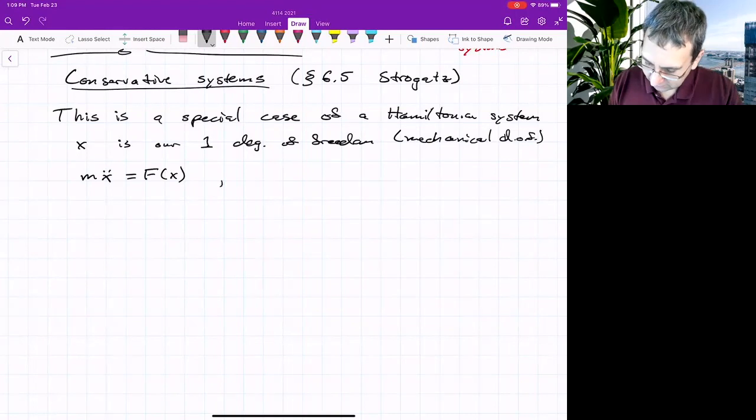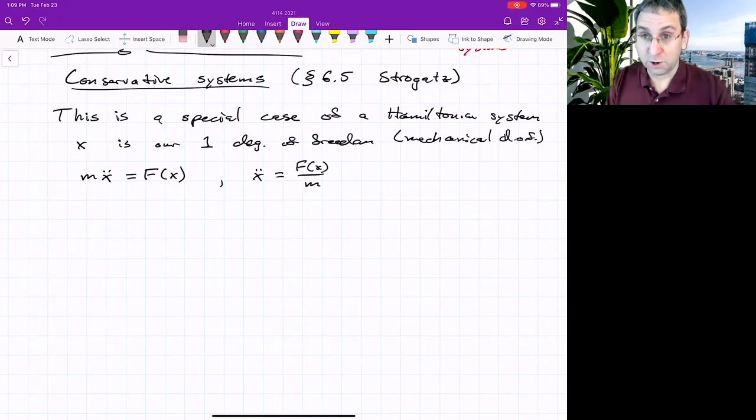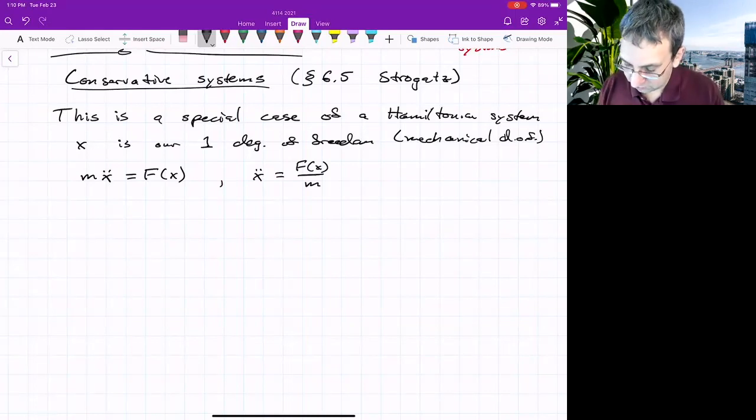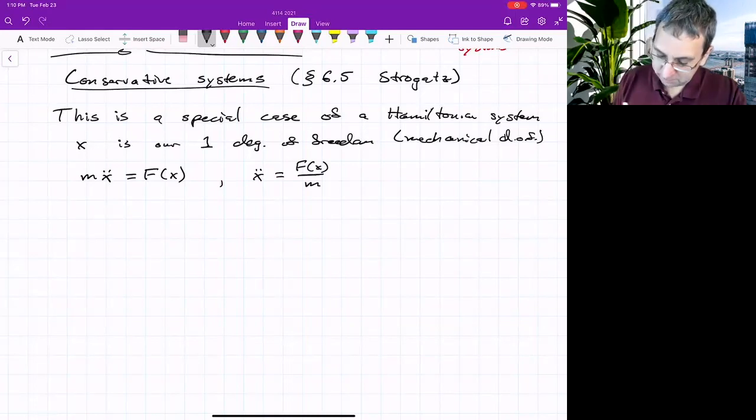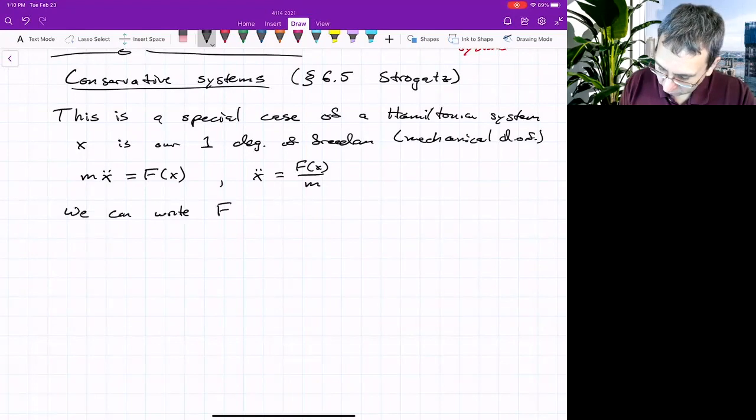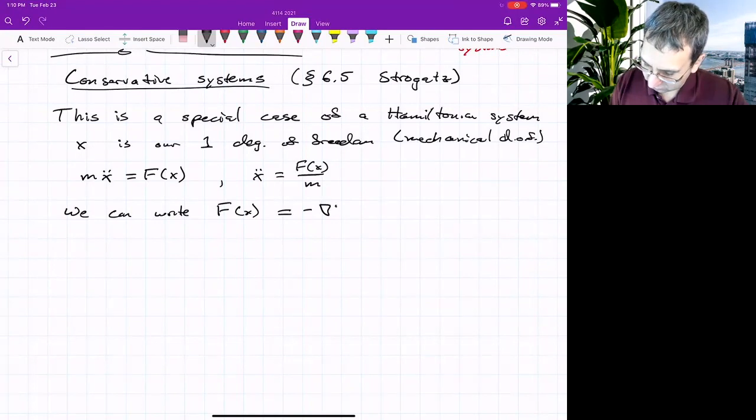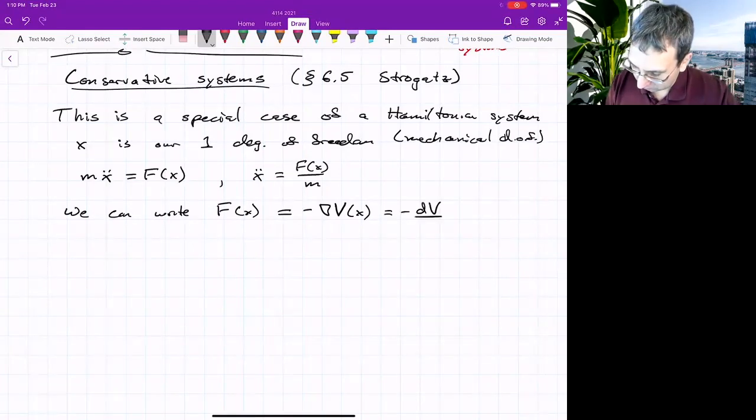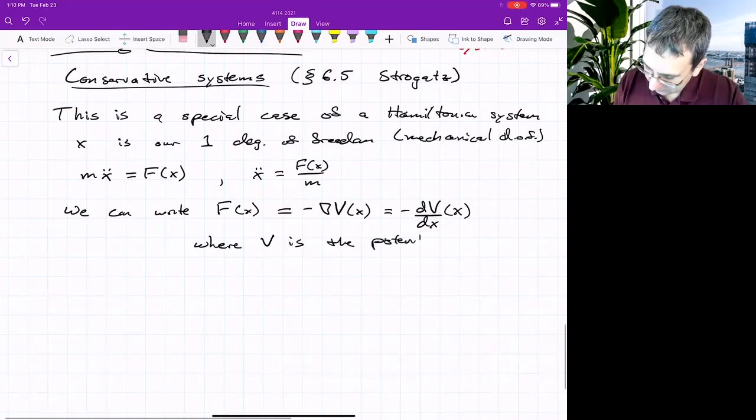We could rewrite this as x double dot equals f of x over m. It's a second order ODE that has special structure. It can be written in the form of Hamilton's equations if we pick something which comes from energy. We can write the force f of x as being the negative gradient of a potential energy function v. This is just a function of the one scalar variable x. So this would be just the total derivative of v with respect to x. v is called the potential energy.